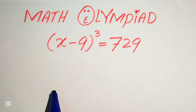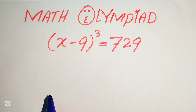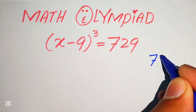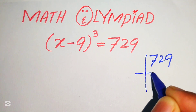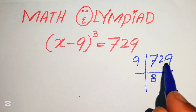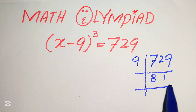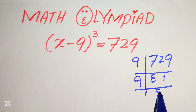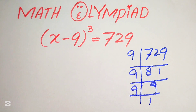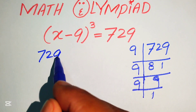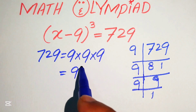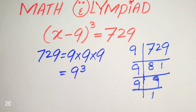First we need to focus on the right-hand side: 729. We need to find the factors of 729. Dividing by 9 gives 81, dividing again by 9 gives 9, and dividing once more by 9 gives 1. So 729 equals 9 × 9 × 9, or in other words, 729 equals 9 cubed.